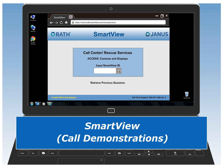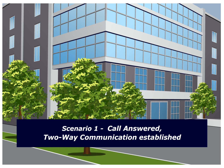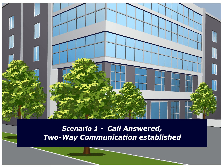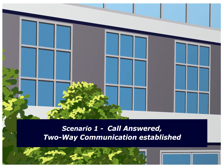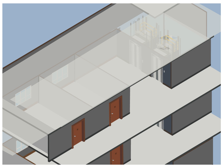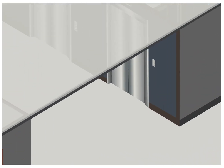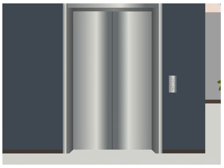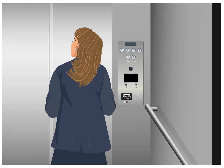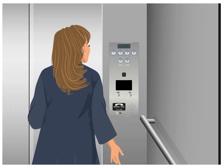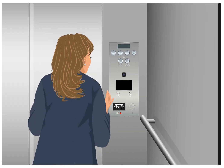Next, we will demonstrate how the system operates. Scenario number one: the call is answered and two-way communication is established. This scenario demonstrates how the system operates when someone can verbally communicate with rescue services. If someone becomes trapped, they will push the emergency phone button to initiate a call.